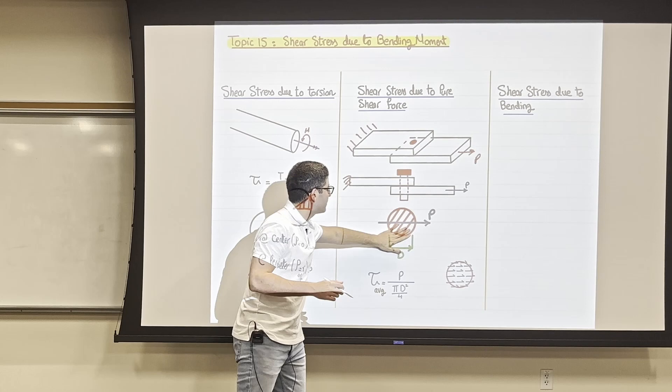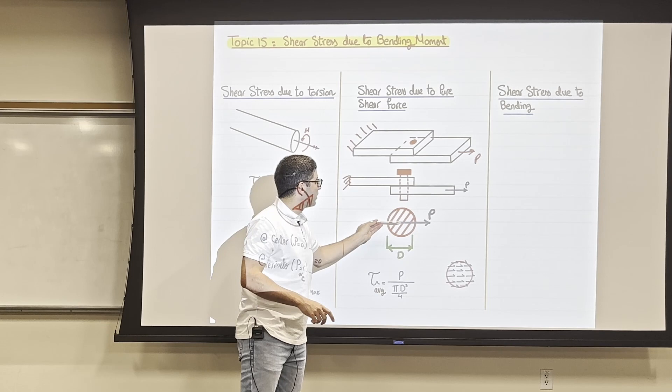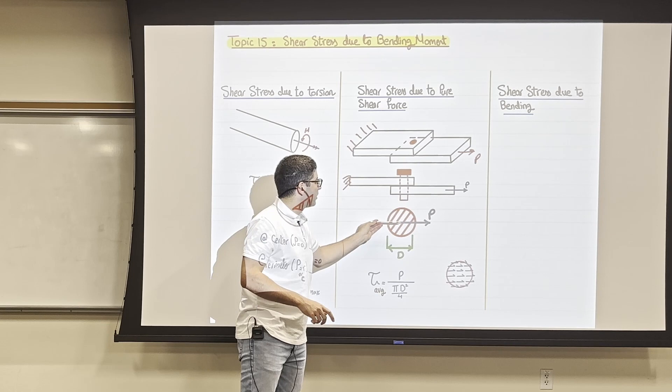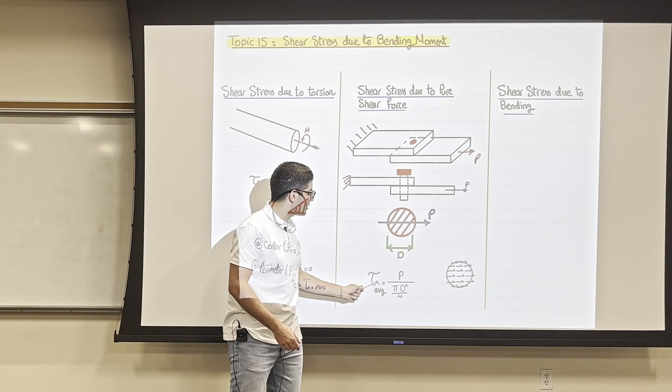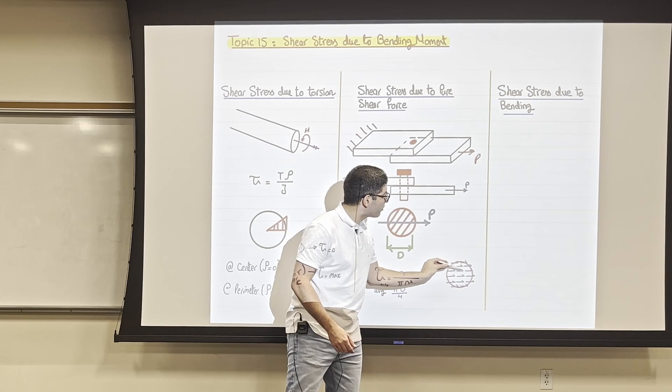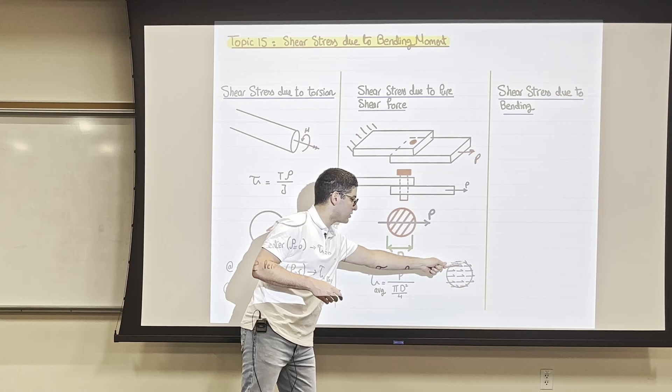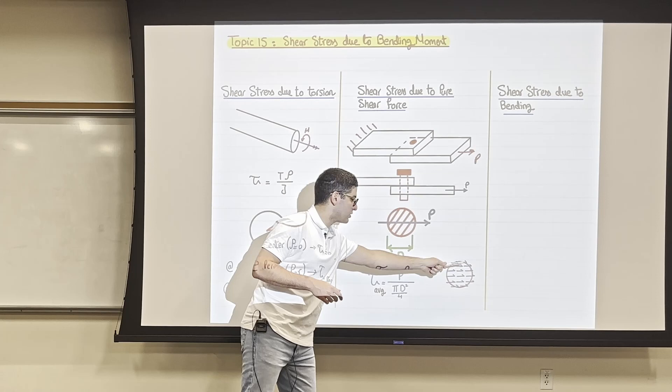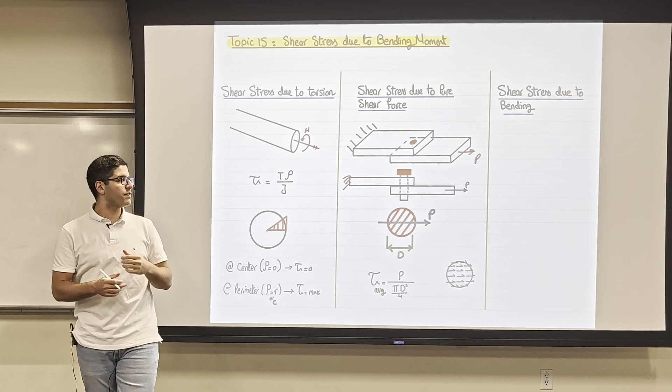When we talked before about shear stress due to pure shear force — when we have a bolt that holds two plates together — that bolt had a shear force. When we wanted to find the shear stress at that cross-section, we simply said tau equals force over area, which tells you that any point within the cross-section feels the same stress. When we have this case, we call it uniform stress. Non-uniform stress means the stresses are different within the cross-section.